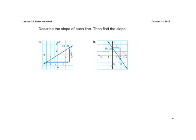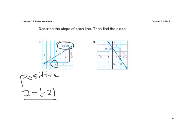Looking at the first line from left to right, it rises, so we say that is a positive slope. To find the slope, we use the slope formula. It doesn't matter which point you call y₂ as long as you're consistent — the x₂ must come from that same point. Using the top point, y₂ is 2, minus our first y-coordinate of negative 2, over x₂ of 3 minus negative 3. That gives us 4 over 6, which simplifies to 2/3 — a positive number, confirming a positive slope.